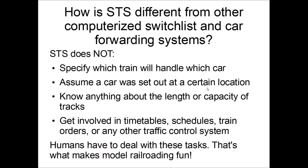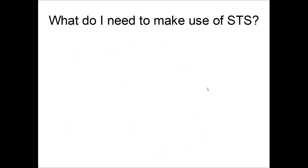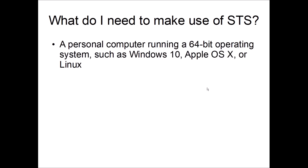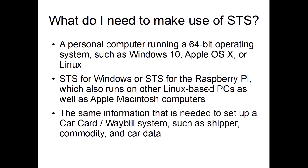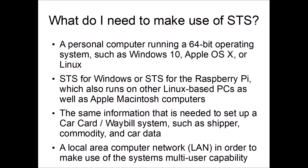What do you need to make use of STS? First, you need a fairly modern computer — Windows 10, Apple's OS X, or any Linux system. You need a copy of the software; there are two versions, one for Windows and one for Linux-based PCs such as the Raspberry Pi, which also works on Apple. You'll need information to set up the shippers, commodities, car data, and so on — if you already have a car card and waybill system, you already have that information. And to make use of the multi-user capability, you need a local area network, which any home Wi-Fi network will handle just fine.